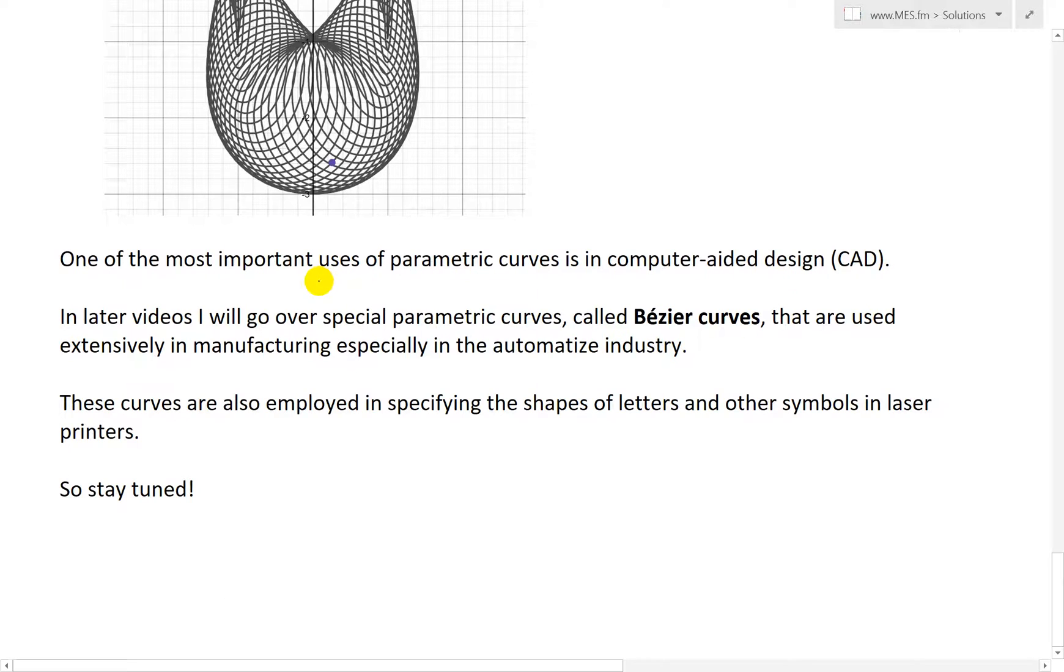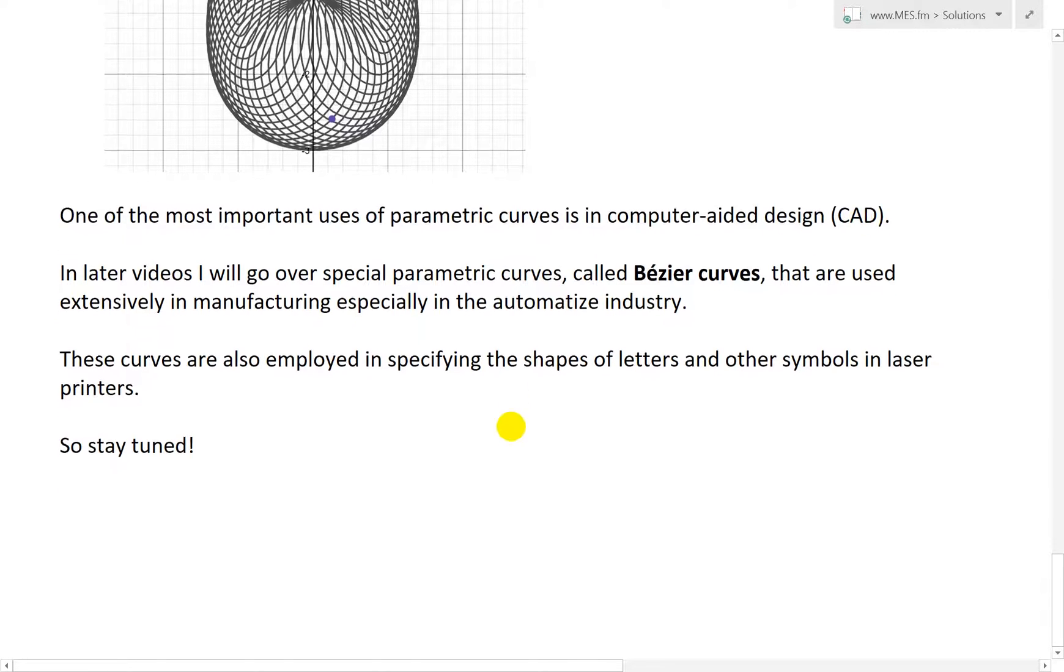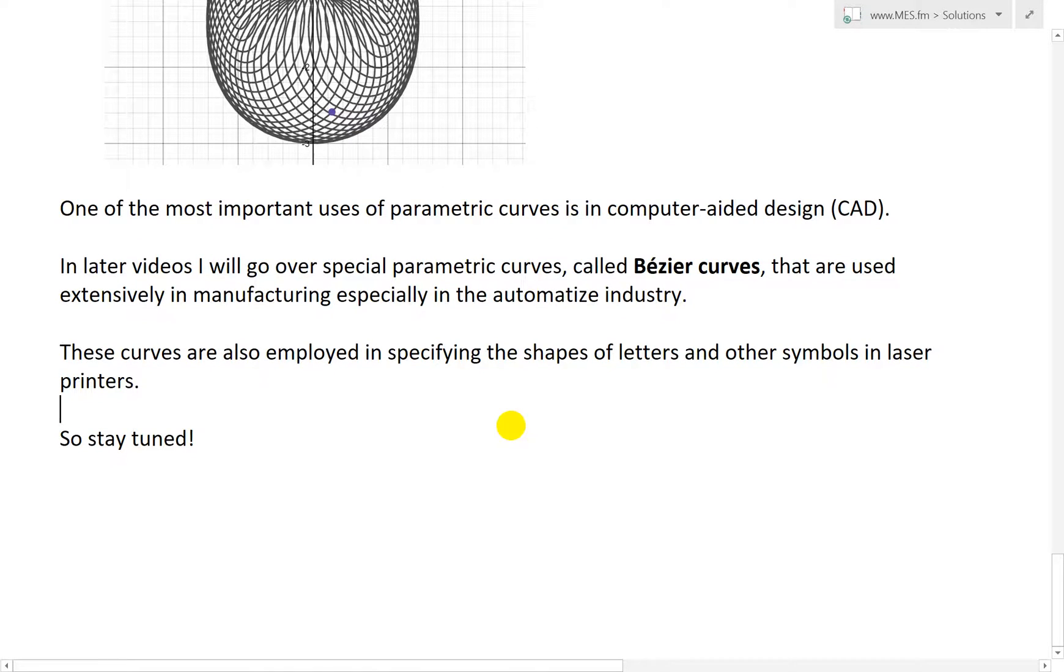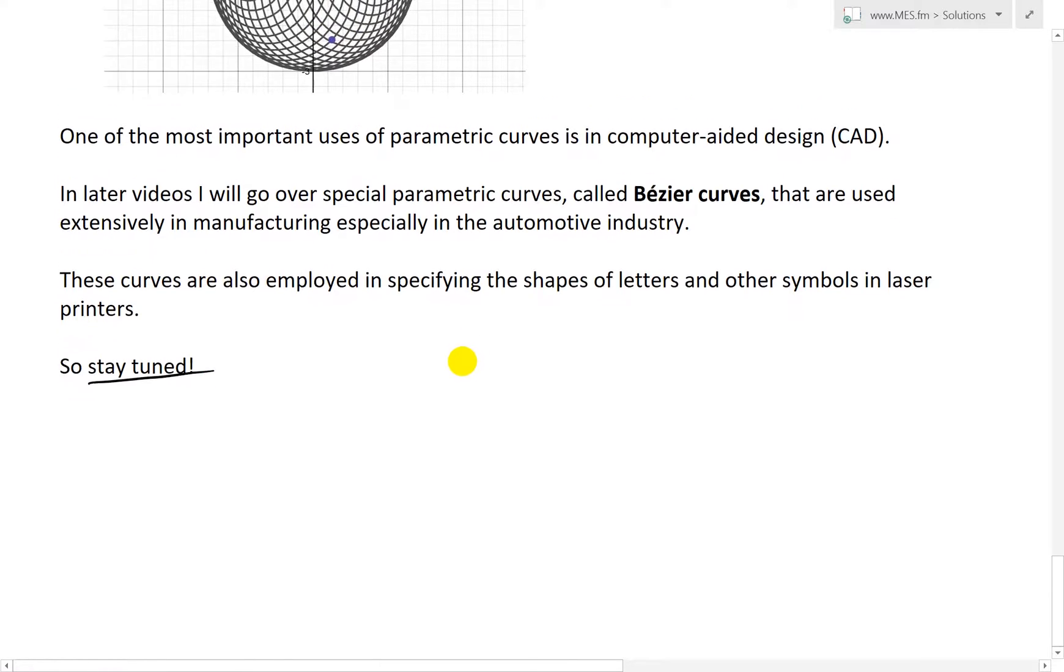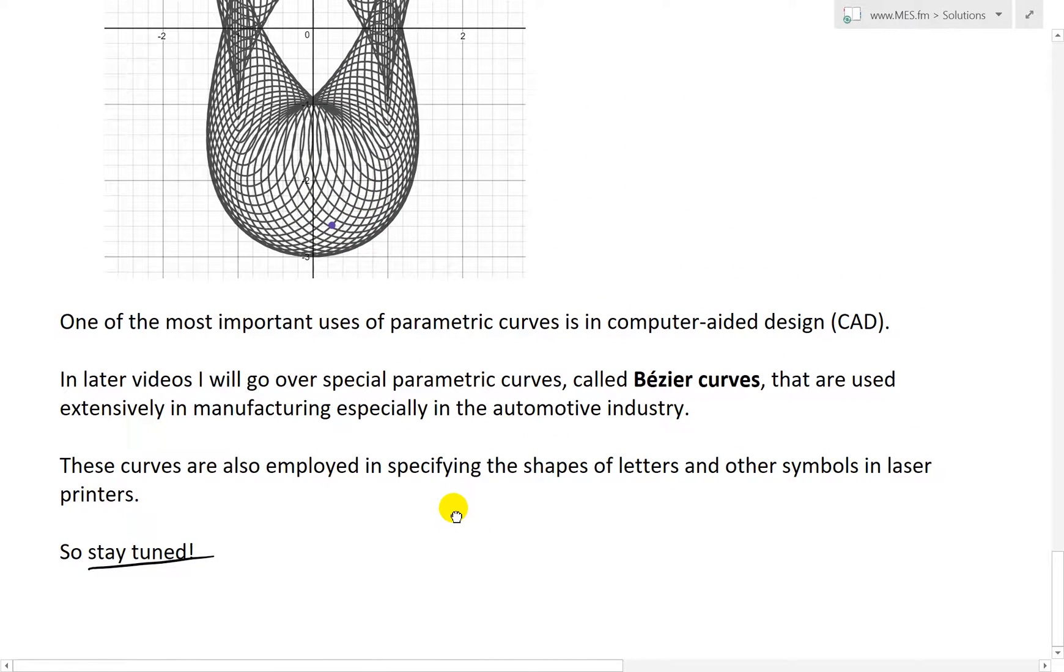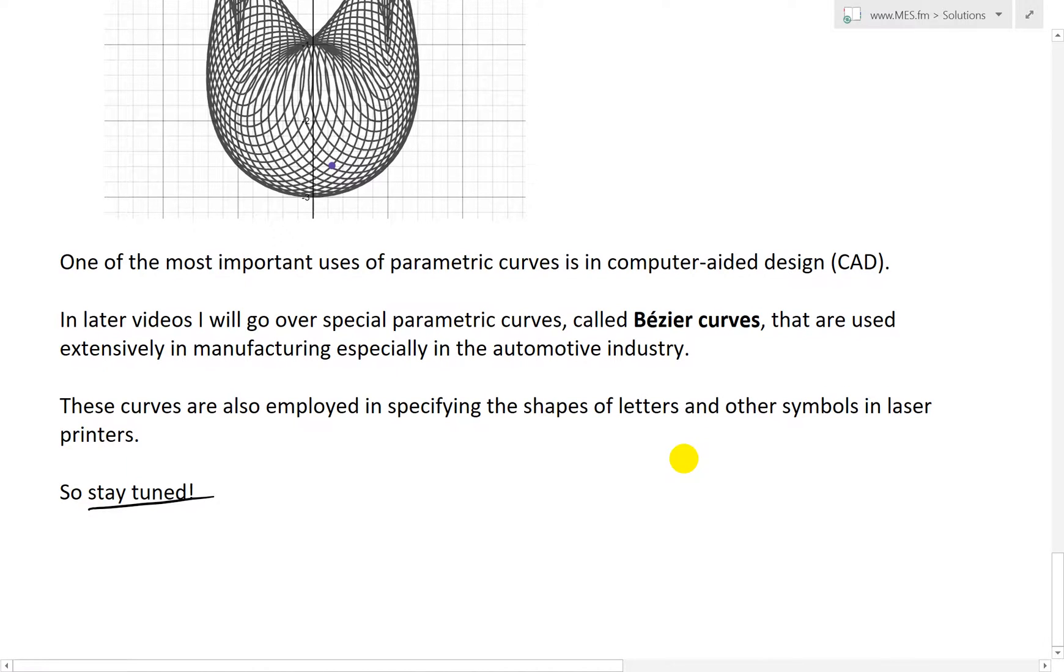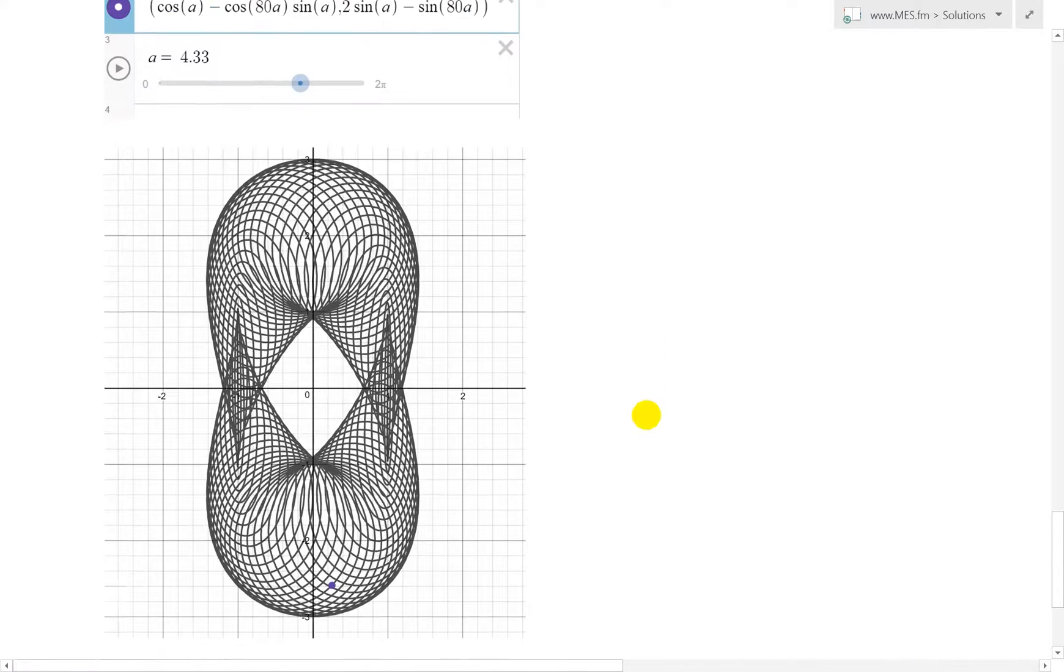One of the most important uses of parametric curves is in computer-aided design, or CAD for short. In later videos, I'll go over special parametric curves called Bezier curves that are used extensively in manufacturing, especially in the automotive industry. These curves are also employed in specifying the shapes of letters and other symbols in laser printers. So stay tuned for that. Those are some absolutely amazing uses of these Bezier curves, and I'll go over the history of Bezier as well.